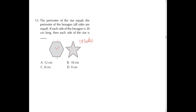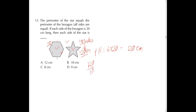Each side of the hexagon is 20 cm. So the perimeter of the hexagon equals 6 × 20 = 120 cm. Since the perimeter of the star equals the perimeter of the hexagon, the star's perimeter is also 120 cm. The star has 10 sides, and the sum of 10 sides equals 120 cm, so one side equals 120 ÷ 10 = 12 cm, which is option A.